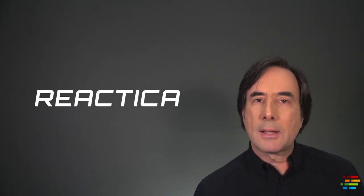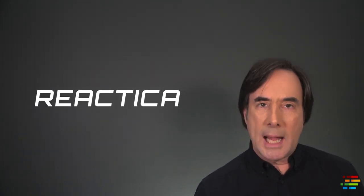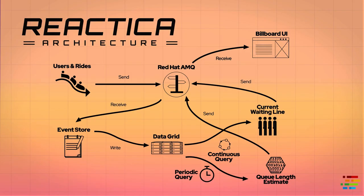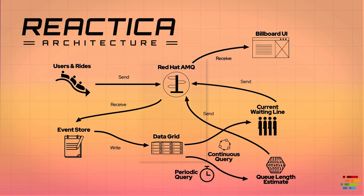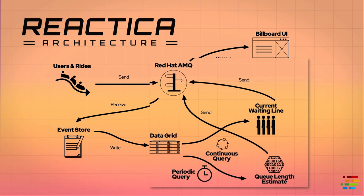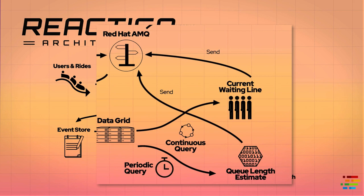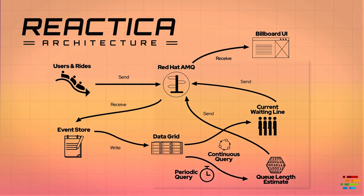Here's a quick look at the architecture of the Reactica system. There are producers and consumers of data. They use AMQ and DataGrid to move data around. Also notice that some components are both producers and consumers. The Q-length calculator component, for example, gets data from the data grid, consumes that data, and produces new data that it sends to AMQ.